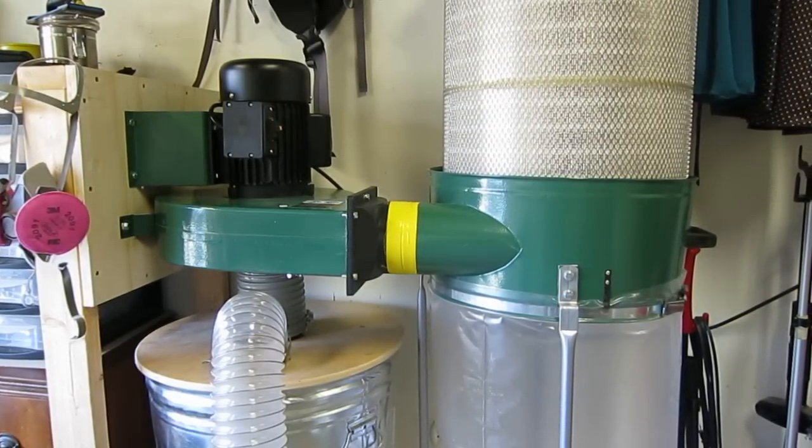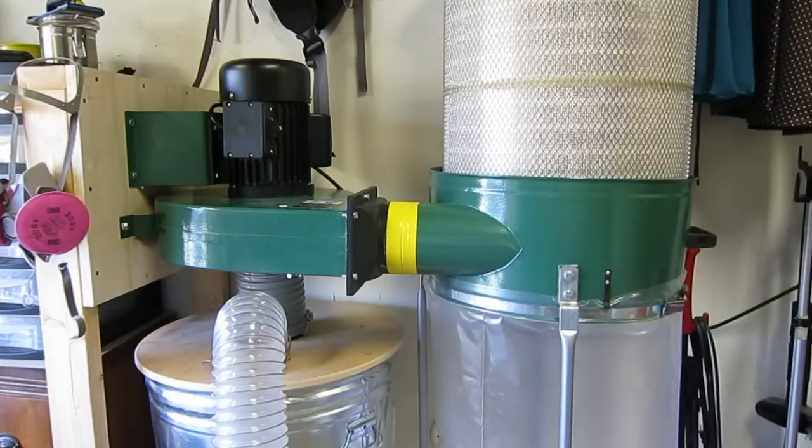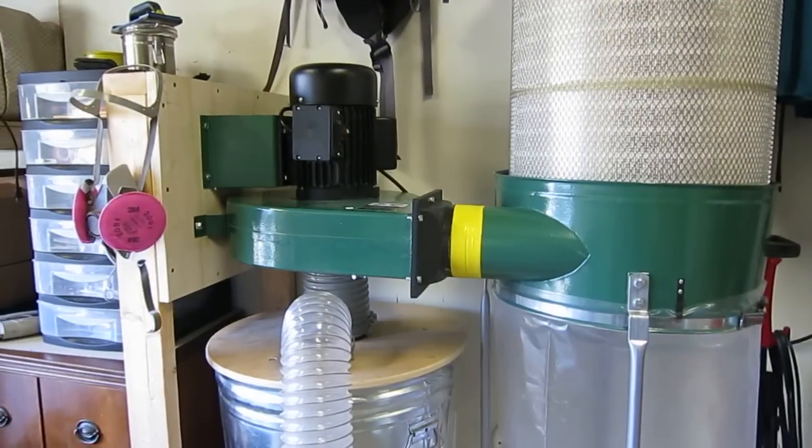In terms of suction, I would say that with the Wynn filter I had an improvement in airflow. By setting everything in line here I also had another improvement in airflow, but then adding the Thien baffle reduced it. So I'd say I'm back at stock levels again. So I'm happy, it's worth it. The two stage separation is worth the slight loss in suction, which you make up if you put everything in line like this.